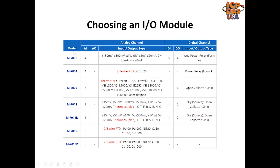Here on the left column you have the model number, and here you have the section for analog channels. We have a couple different selections: four channel analog input, eight channel analog input on the M7005, and they go from anywhere from one channel up to 20 channels analog input. On the right-hand side, we have the digital channels — five digital in, four digital out. Those columns stand for: analog in, analog out, digital in, digital out. For the M7005, it has six channels of open collector digital output.